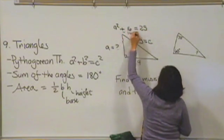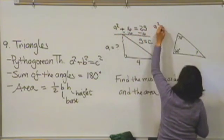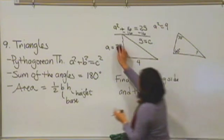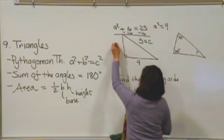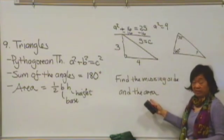I'll subtract 16 from both sides. That tells me that A squared is equal to 9, and the number that I square to get 9 would be 3. So now I know that this side is 3 units long. So the missing side is 3.